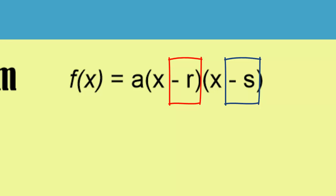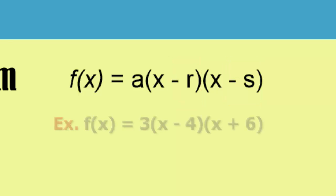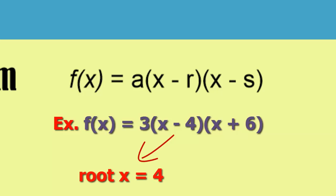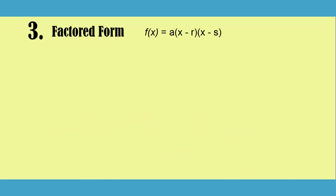If we see a bracket that says x minus 4, that means that we have a root at positive 4. Whereas if I had another bracket that said x plus 6, that means that I would have a root at negative 6. Once we know the roots, factored form is also useful for finding the vertex.